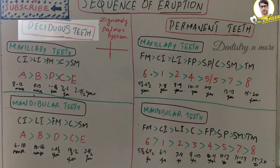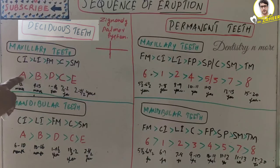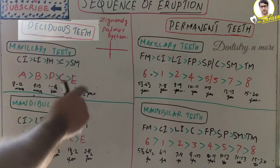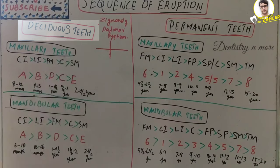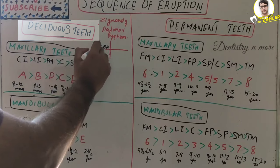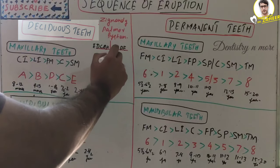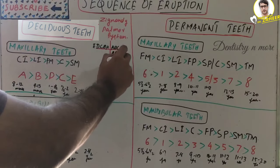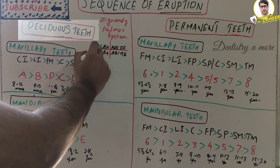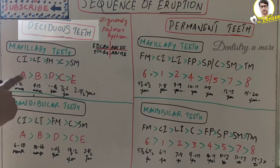While considering the maxillary teeth, the first tooth that erupts is the maxillary central incisor — a deciduous one, denoted by 'A'. We use the Zsigmondy-Palmer system, which is a quadrant system. In each quadrant we have A, B, C, D, E — that is central incisor, lateral incisor, canine, first molar, and second molar. This notation applies to all quadrants.